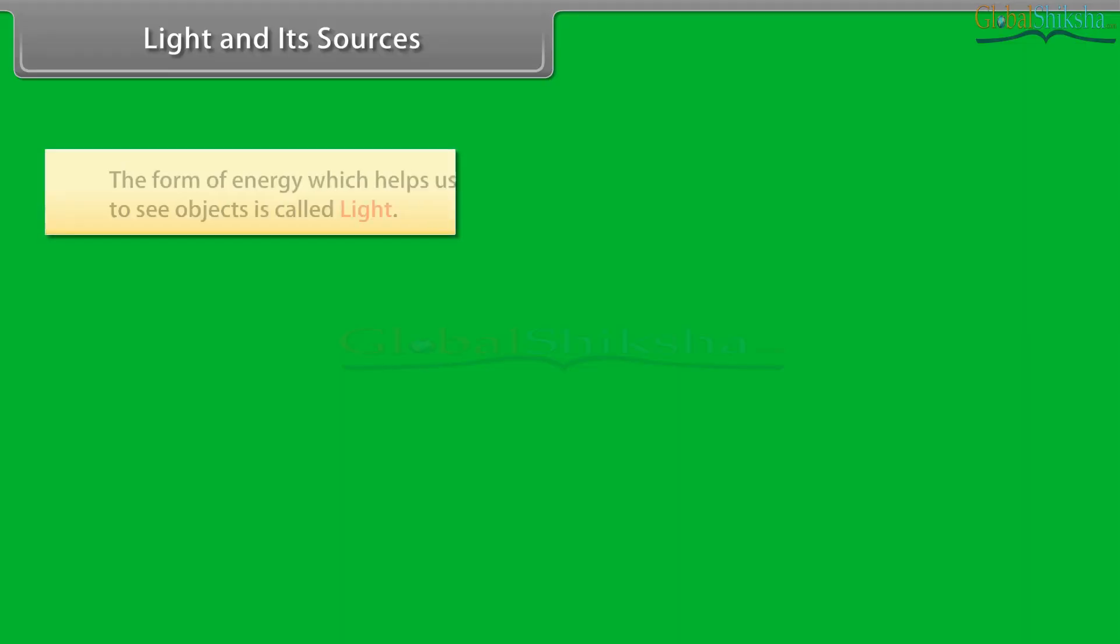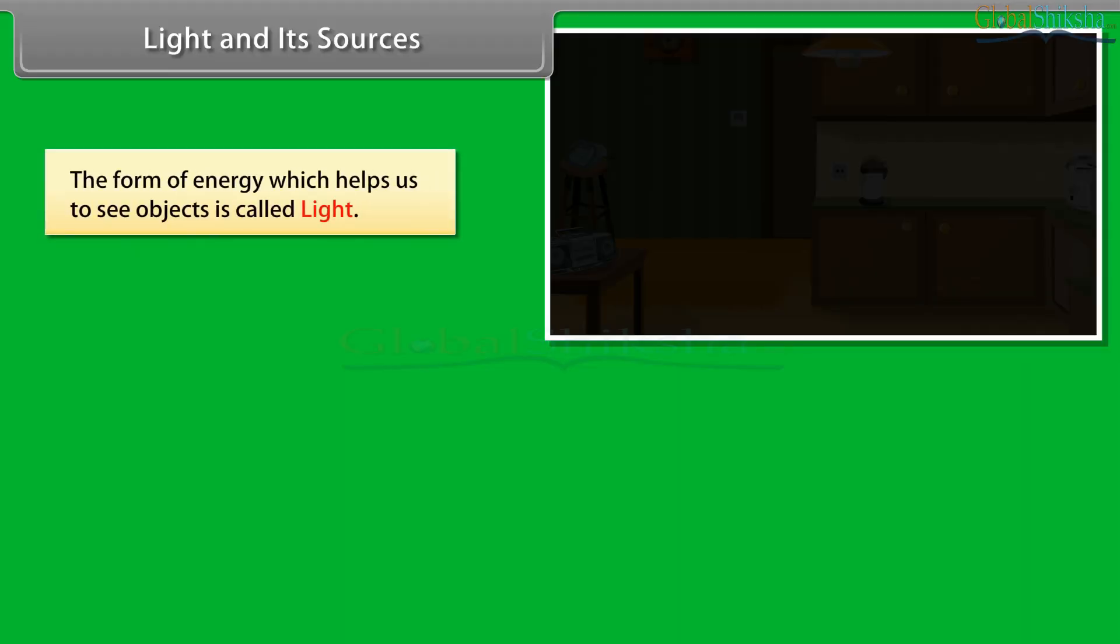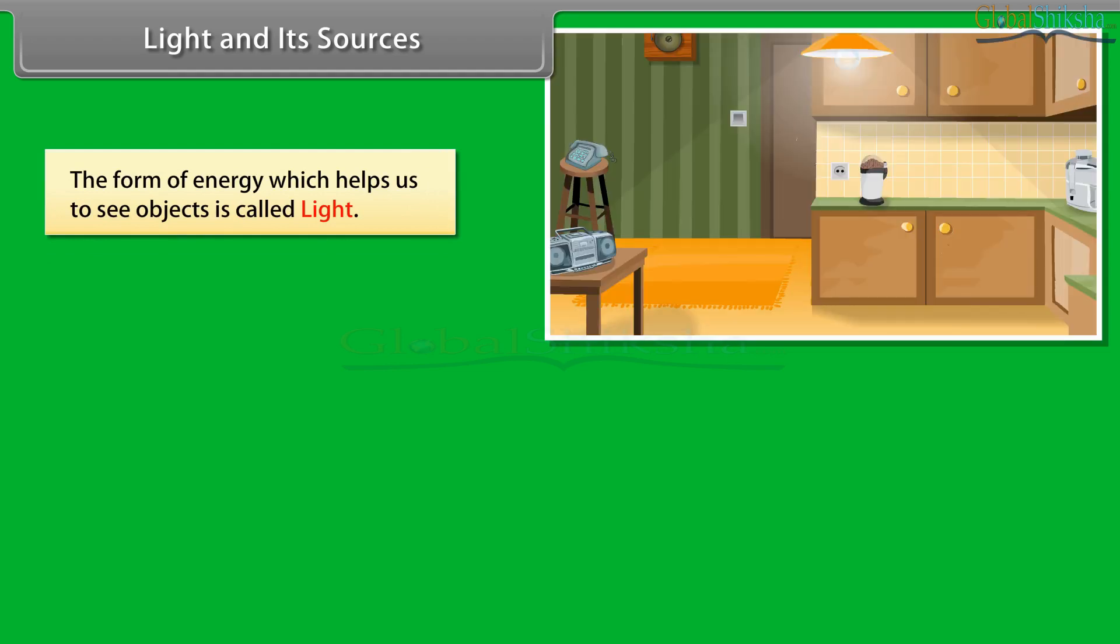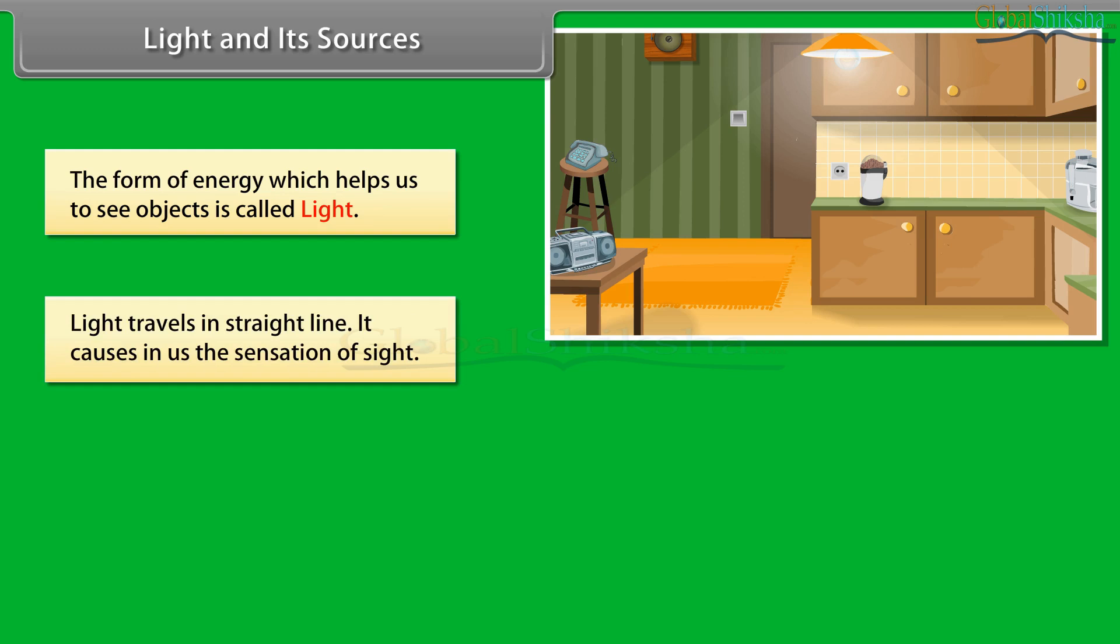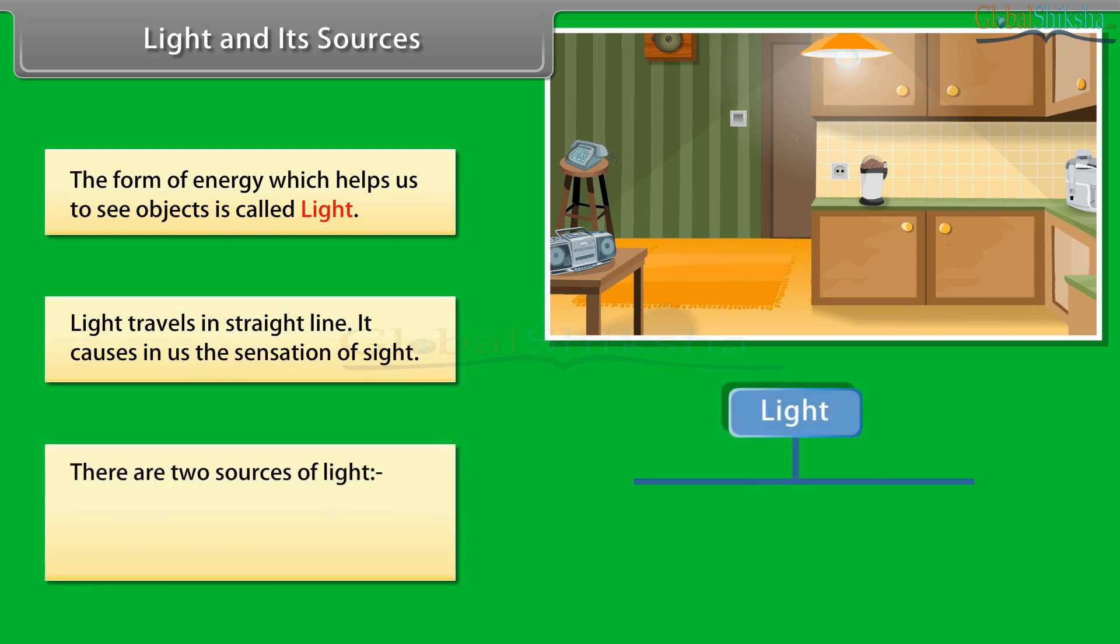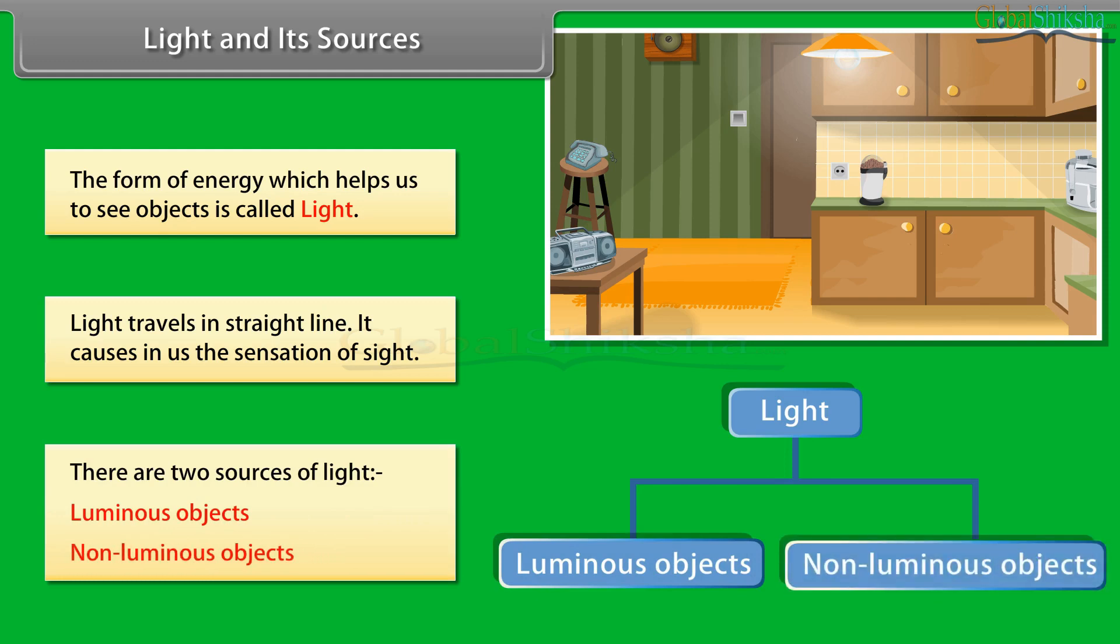Light and its sources. The form of energy which helps us to see objects is called light. Light travels in straight line. It causes in us the sensation of sight. There are two sources of light: luminous objects and non-luminous objects.